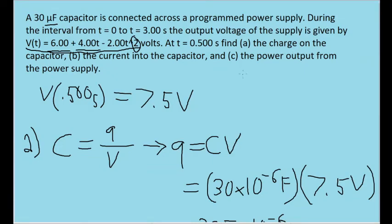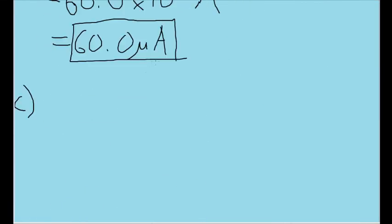Finally, for part C, we're asked to find the power output from the power supply. Now a formula worth memorizing for electricity problems is that electric power is equal to the current times the voltage, or times the potential difference rather. Now we already found the current. That was the goal of part B. So we have that at our disposal now.